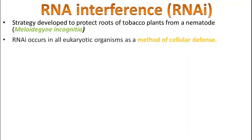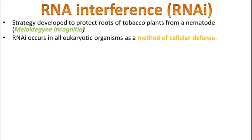RNA interference occurs in all eukaryotic organisms as a method of cellular defense. When a cell needs to protect itself, the process of RNAi is carried out by all eukaryotic cells.